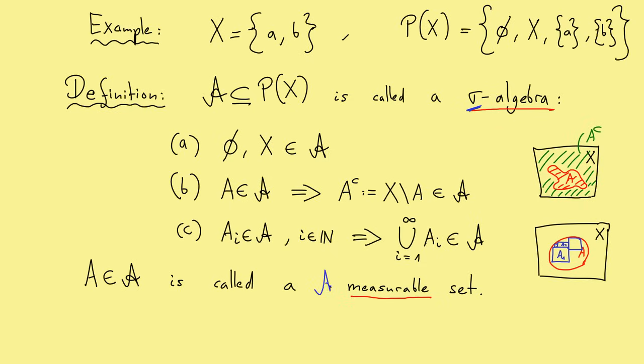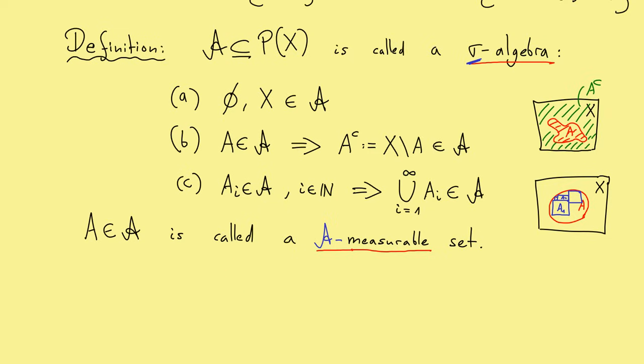Therefore, sometimes also A is in the definition of measurable. So it's called A measurable if we should emphasize which sigma algebra is used here. So now, of course, we need some examples.